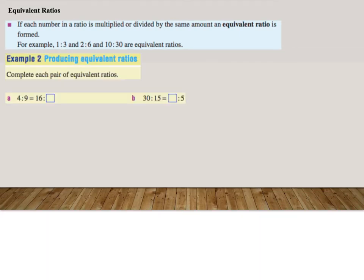Example 2. Producing equivalent ratios. Complete each pair of equivalent ratios. A, 4 to 9. 4 to 9 is the same as, and I would like you to write it underneath each other, 16. Now what we want to know is, how can I get from 4 to 16 with only using multiplication and division? Once I figure that out, I will also do it on the right hand side to get my equivalent ratio. So 4 times 4 is 16, which means 9 times 4 is 36. So I can say that 16 to 36 is equivalent to 4 to 9.